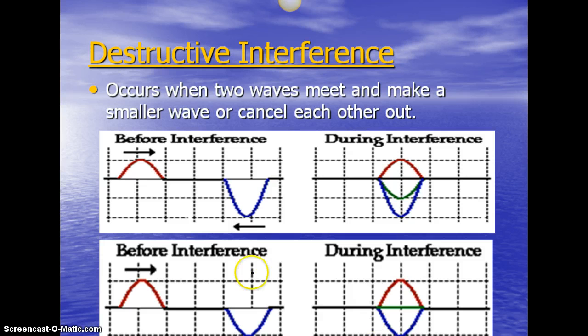Destructive is when the crest meets a trough. You can see that here in the picture. So the crest meets a trough and they basically cancel each other out or make a smaller wave. In this case, it makes a smaller wave because the trough of one wave was larger than the crest of the other wave.